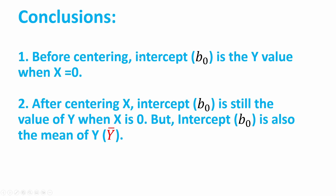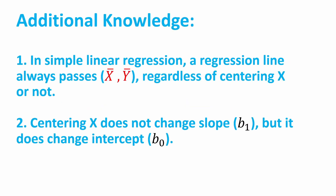To summarize: before centering, the intercept is the y-value when x is zero. After centering x, the intercept is still the value of y when x is zero, but b0 is also the mean of y. Additionally, in simple linear regression, the regression line always passes the point of the mean of x and mean of y, regardless of centering. Centering x doesn't change the slope, but it does change the intercept, namely b0. That's the end of this tutorial.